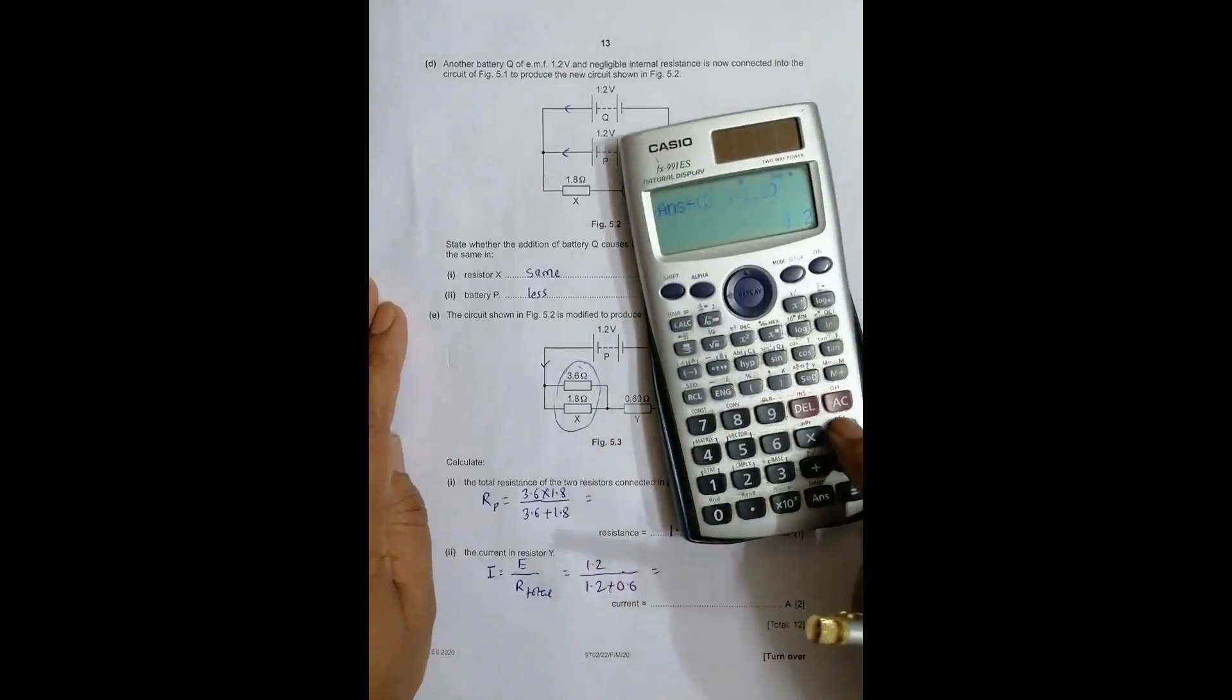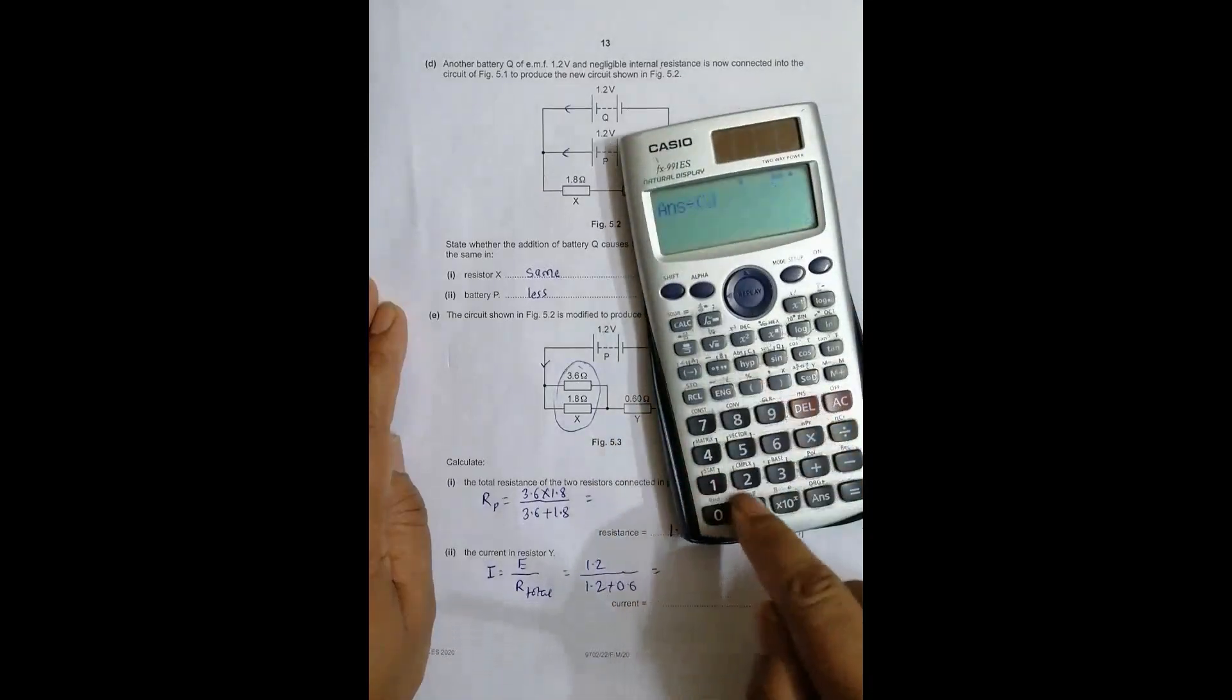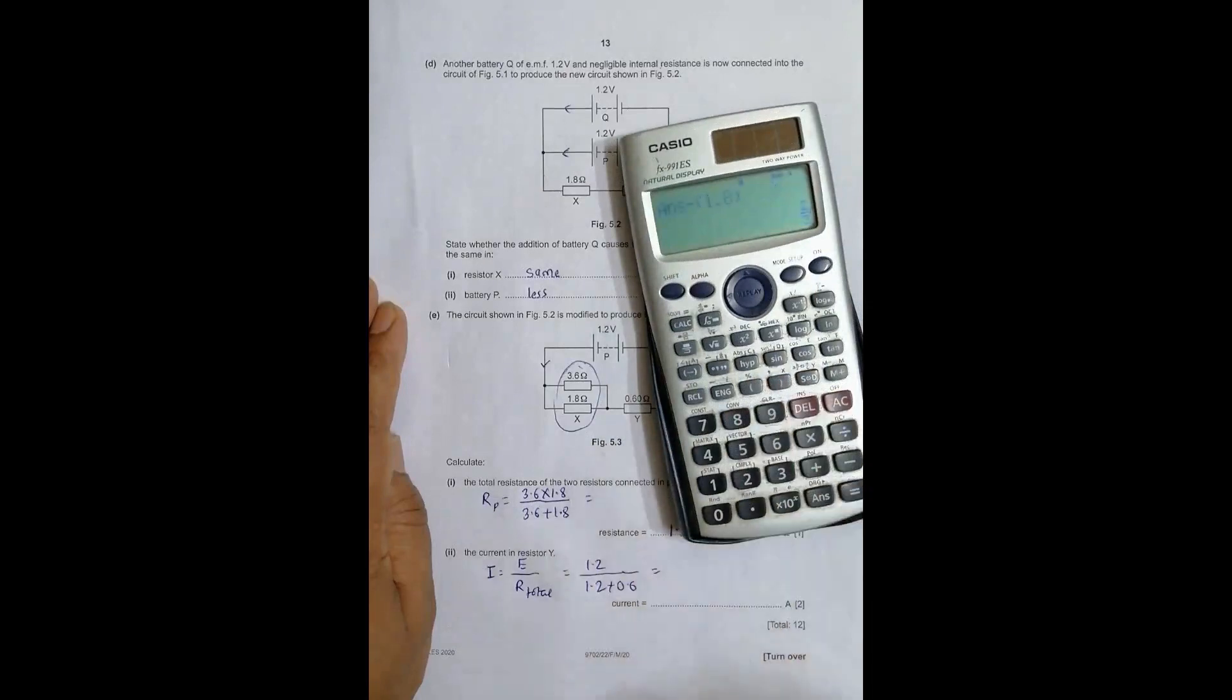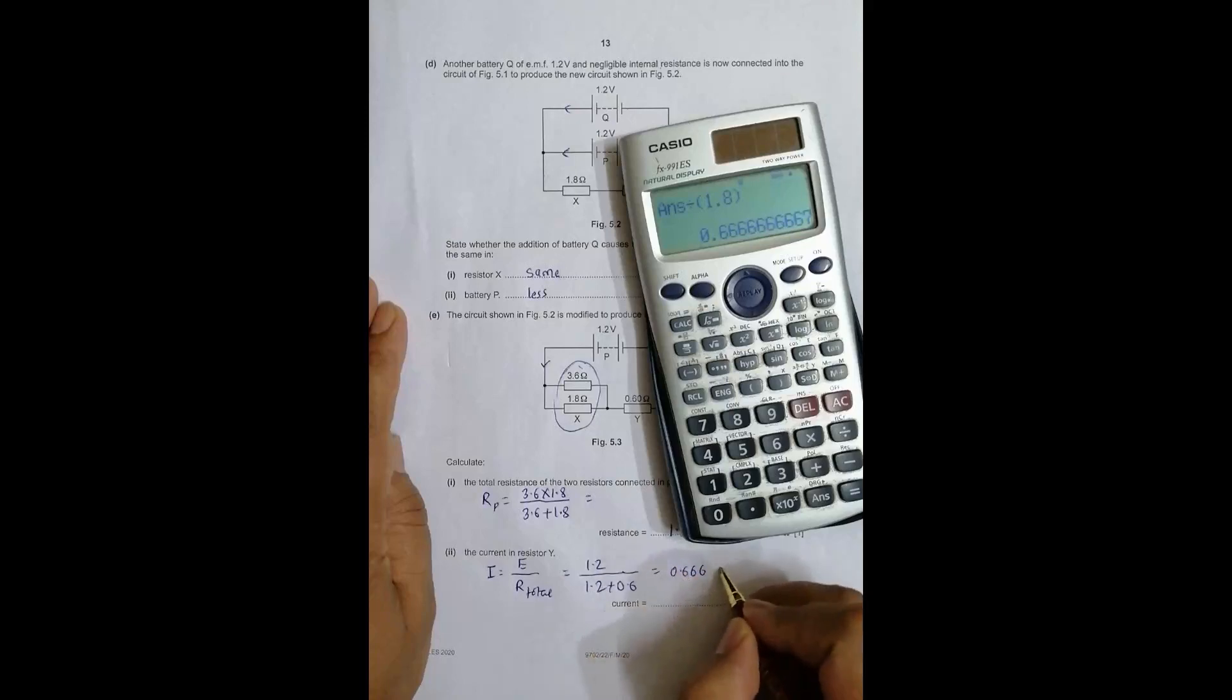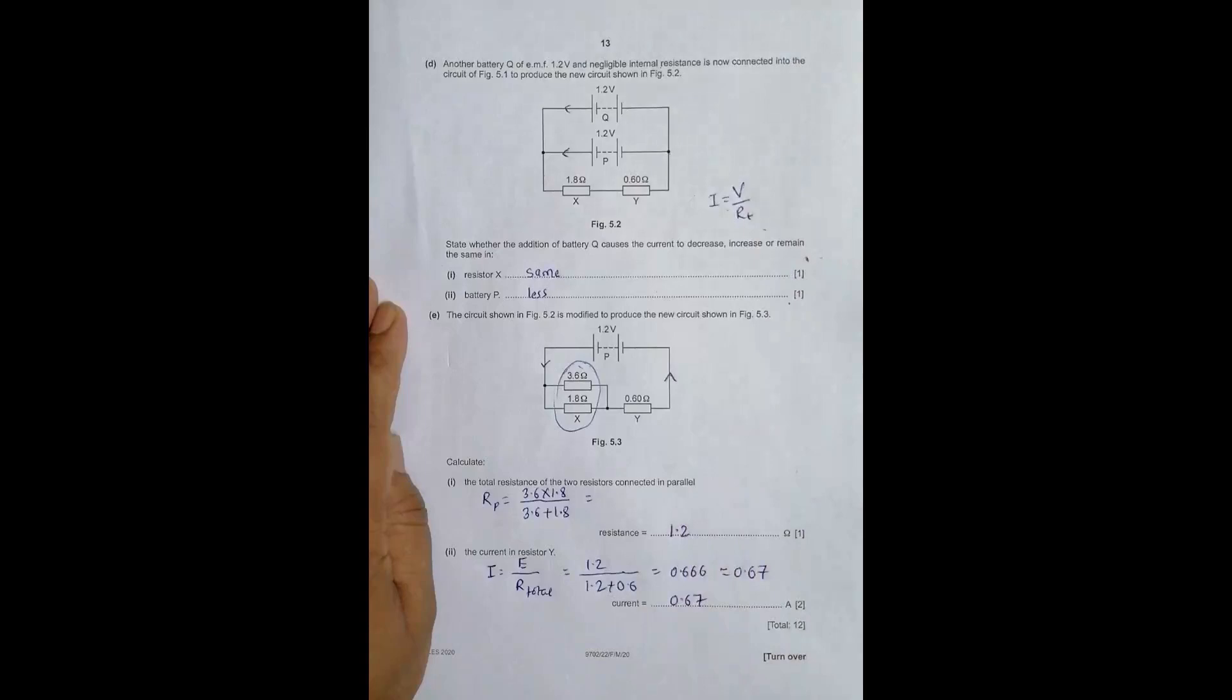So this becomes 1.2 divided by 1.8 equals 0.666 and so on, which is nearly equal to 0.67 amperes. This completes the solution to this problem.